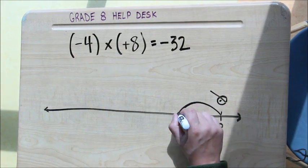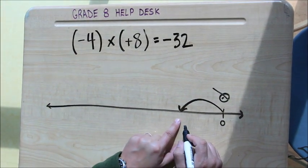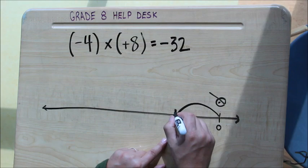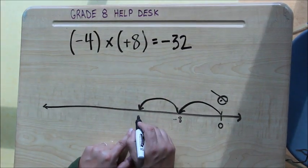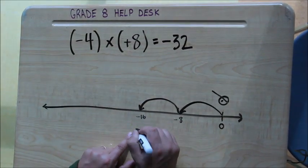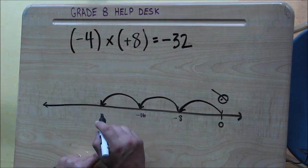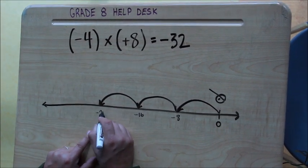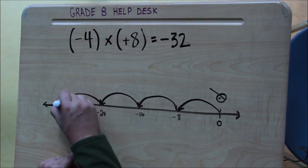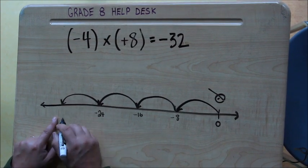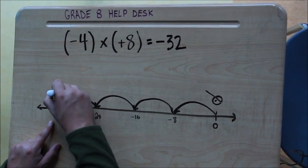So I'm going one jump, that will take me forward to negative eight. Second jump takes me to negative 16. Third jump takes me to negative 24, and my fourth and final jump takes me to negative 32.